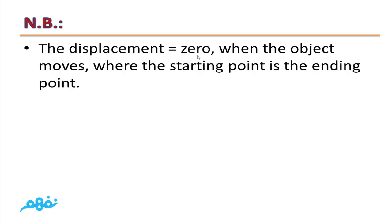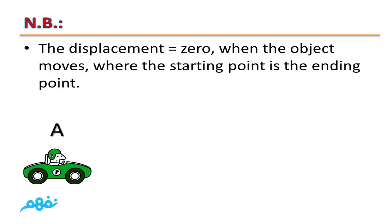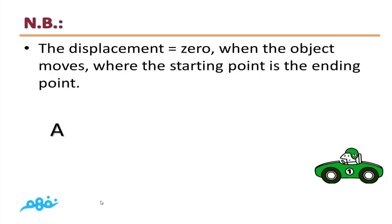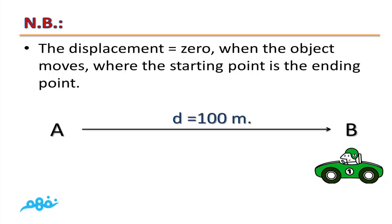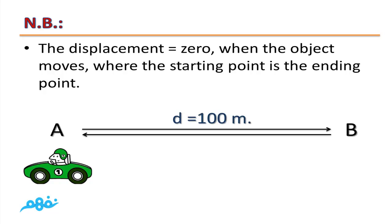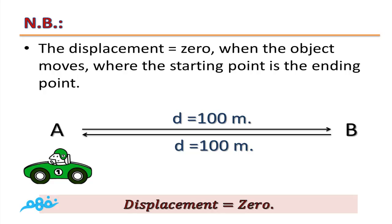Displacement may equal zero. This happens when the object's starting point is the same as its ending point. For example: a car moves from A to B, a distance of 100 meters, then returns to its starting position. In this case, its total distance is 200 meters, while its displacement is zero because the starting point and ending point are the same. Therefore, displacement equals zero.